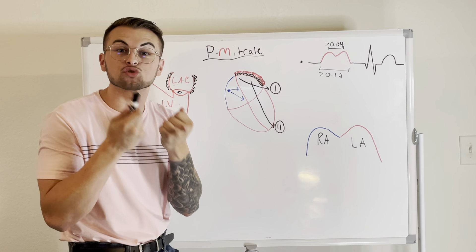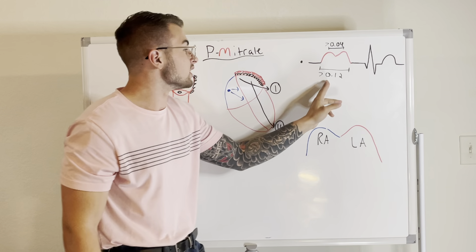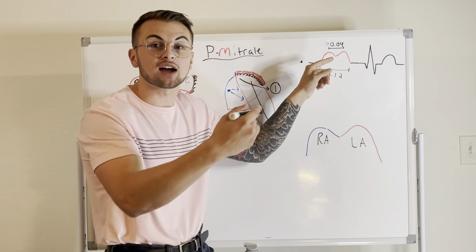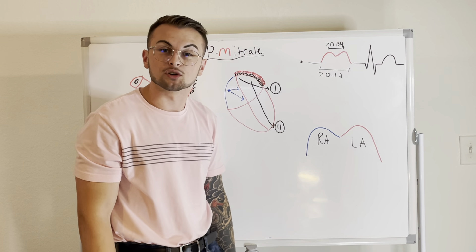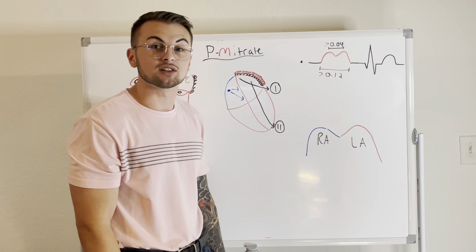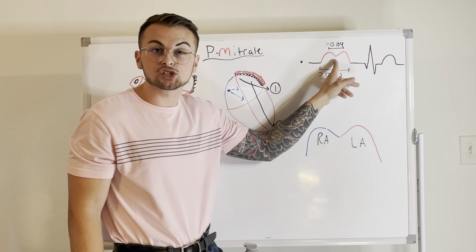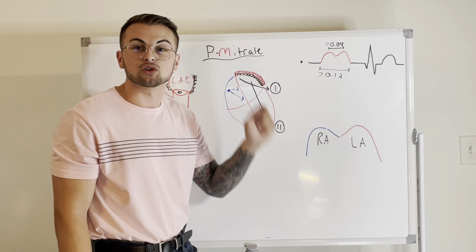P-mitrale is defined as having an M-shaped P-wave — think M for mitral — that is greater than 0.12 seconds and has a notch that is greater than 0.04 seconds. Remember that the normal P-wave duration is anywhere from 0.08 to 0.11 seconds. Basically, we have a P-wave that is prolonged and has a notch, and it must meet the length criteria to be called P-mitrale.